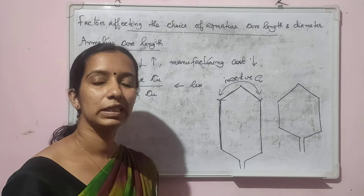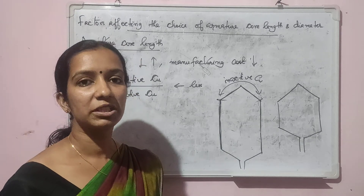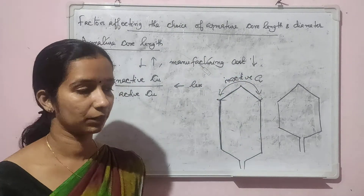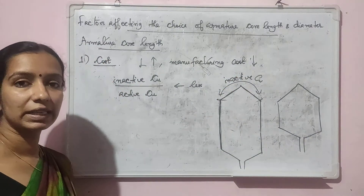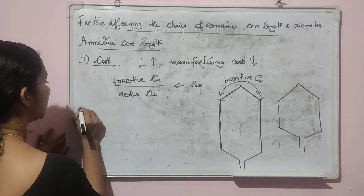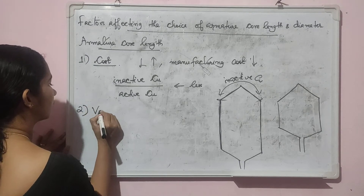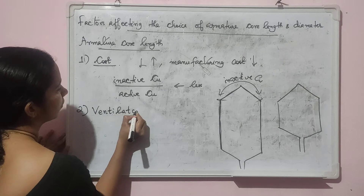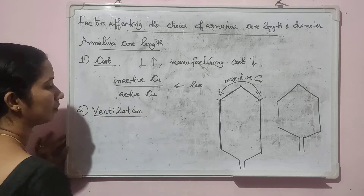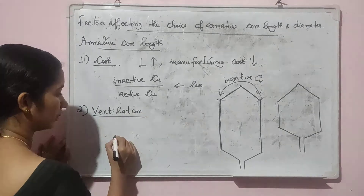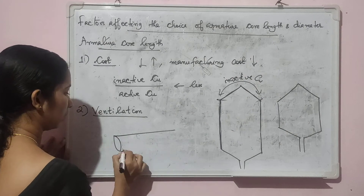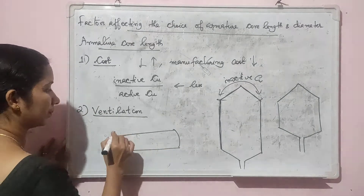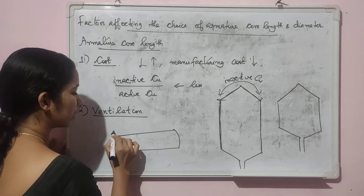So with the increase in core length, the machine becomes cheaper and the manufacturing cost decreases. The second factor to be considered is ventilation. This will be our armature core, and outside that we have our stator.